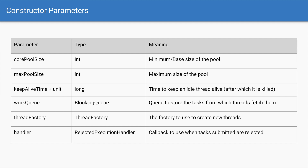Then there is a thread factory, which is the factory used to create new threads in case the pool needs new threads. And last but not least is the rejected execution handler — this is the callback or handler method used to handle rejections when you submit tasks to the queue and the thread pool is unable to accept those tasks.